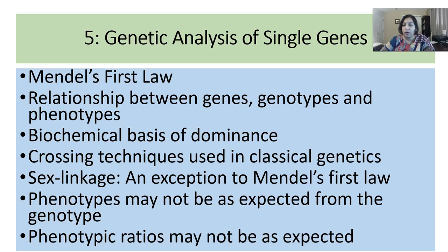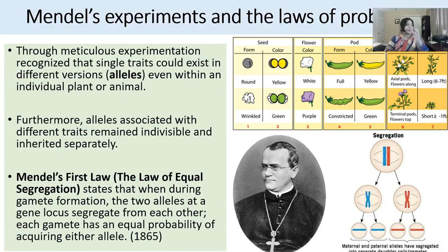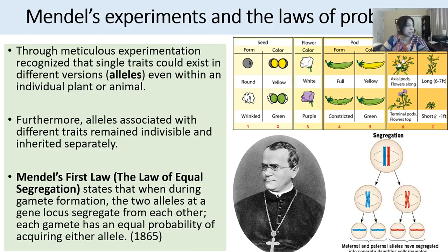We're going to finish off by looking at instances where phenotypes — what is visible in an organism — may not be as expected based on genotype alone. Mendel is somebody you've heard about before in many different classes. He is known as the father of modern genetics, or classical genetics. Gregor Mendel was a monk of German-speaking Czech origin, but he was more than just that — he was a very learned man, deeply interested in scientific fields of various types.